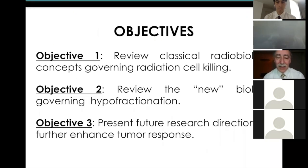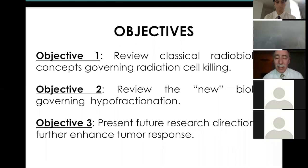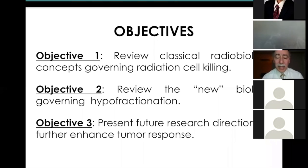There are three objectives. The first is to review classical radiobiology — the concepts that govern low-dose radiation. The second is to review new biology — things that happen at high dose. The third is to present, in a cursory way, future research directions.